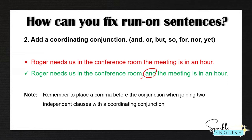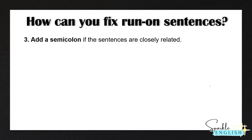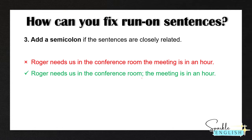Remember to place a comma before the conjunction when joining two independent clauses with a coordinating conjunction. I have more videos on how to properly use commas, but it's very important to remember that when joining two independent clauses with a coordinating conjunction, you have to put a comma before it. The third way to fix a run-on sentence is to add a semicolon if the sentences are closely related. So: 'Roger needs us in the conference room; the meeting is in an hour.' The reason Roger needs everyone in the conference room is because they're having a meeting, so these sentences are closely related.